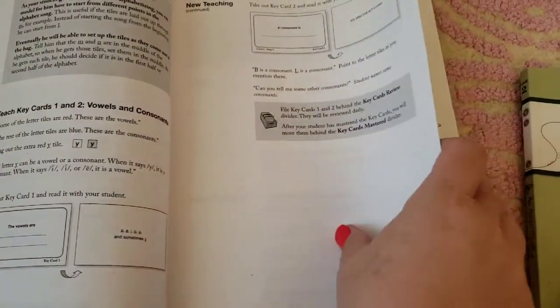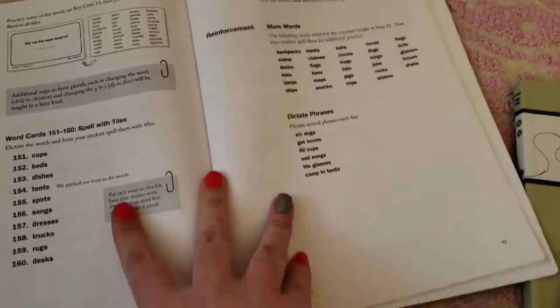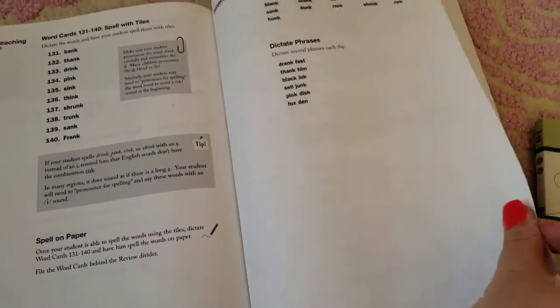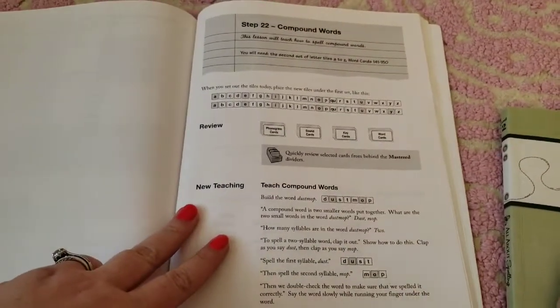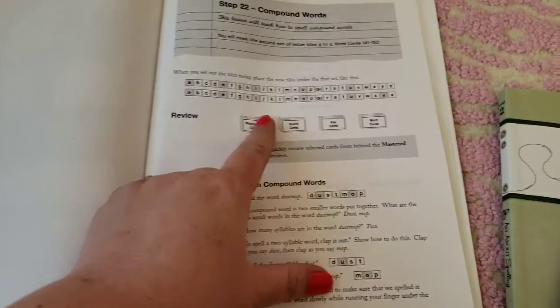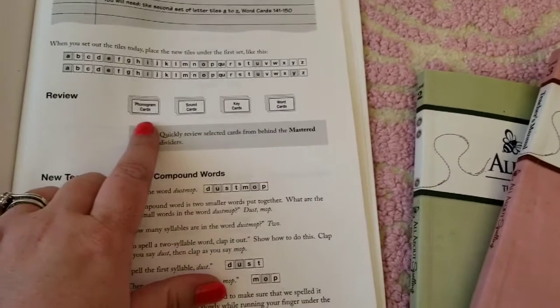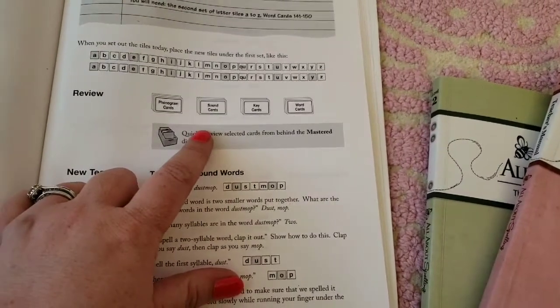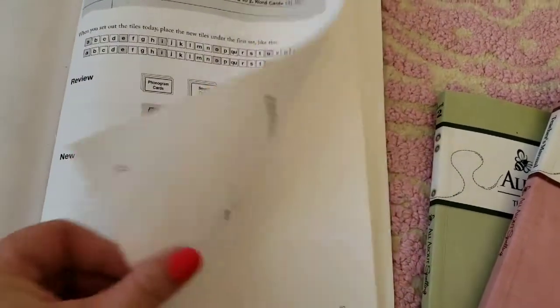Let's skip farther back because the first ones are set up a little bit differently. So this one, you're teaching compound words. It tells you everything to do, what cards to get out, because there are phonogram cards, sound cards, key cards, and word cards, and they're color coded.